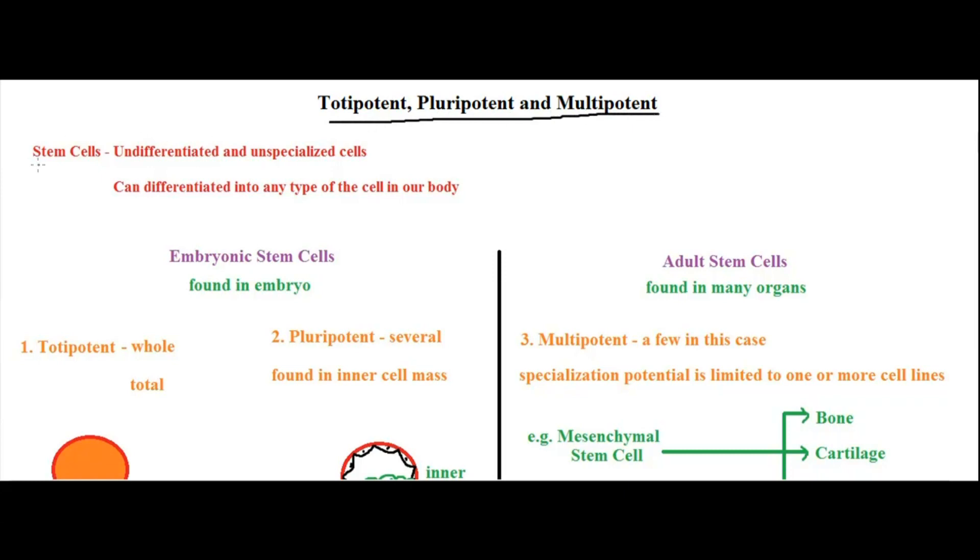First things first, what are stem cells? Stem cells are undifferentiated, unspecialized cells. That means they can differentiate into any type of cell that is present in our body. We have more than 200 cell types in our body, and a stem cell can give rise to any of these cells.